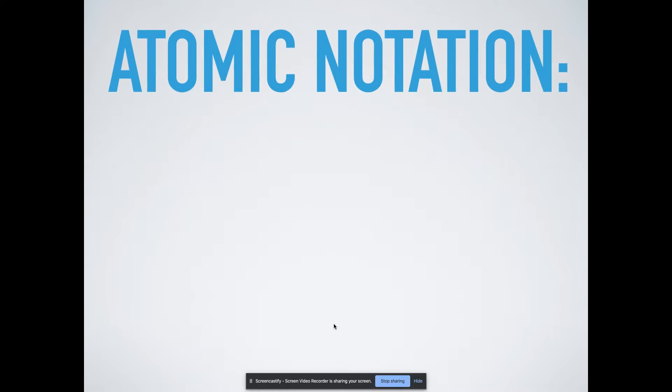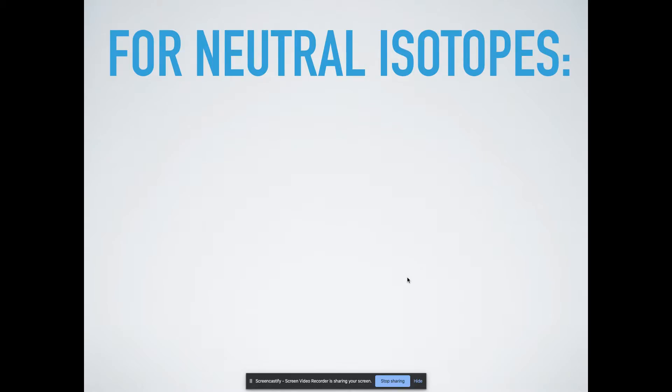So atomic notation. This is what atomic notation looks like. Let's diagram this in your notes first before we label it. But each letter represents something. For neutral isotopes, just regular old atoms, the atomic number Z in that diagram that we just saw equals the number of protons but also equals the number of electrons because in a neutral isotope the number of protons and electrons have to be the same because it's neutral.